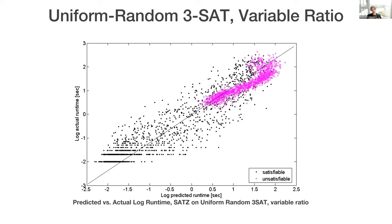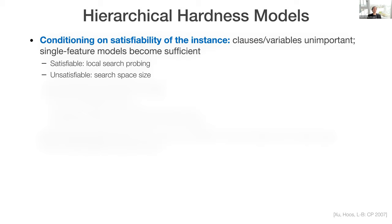So we were intrigued, though, by the great difference between the quality of our predictions for unsatisfiable and satisfiable instances. And this led us to ask whether we could build much better models if we imagined that we knew the satisfiability status of an instance. Of course, this means the clauses and variables ratio would be unimportant. And indeed, it turned out that single feature models in this case became sufficient. So when instances were satisfiable, then turns out those local search probing features that I told you about before were all you needed to make good predictions. And when instances were unsatisfiable, then those search space size estimates turned out to be sufficient to make good predictions.